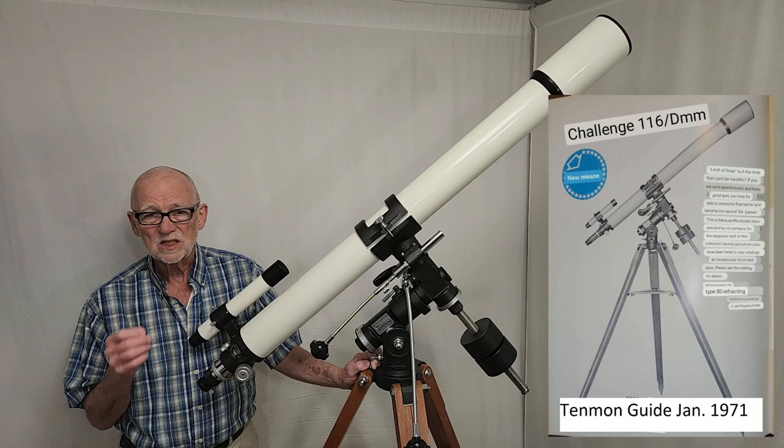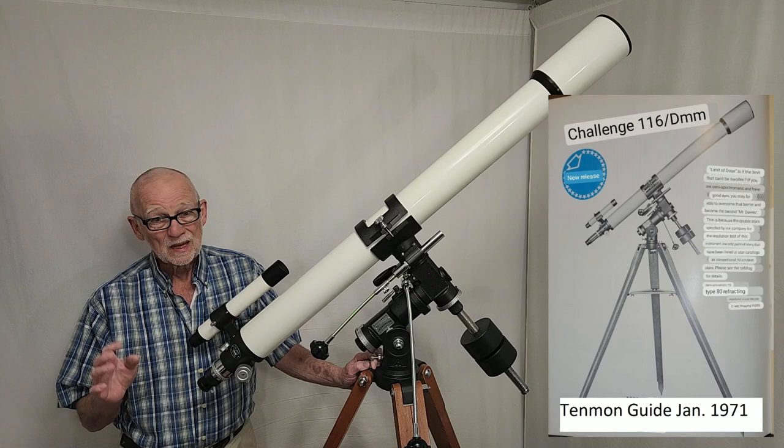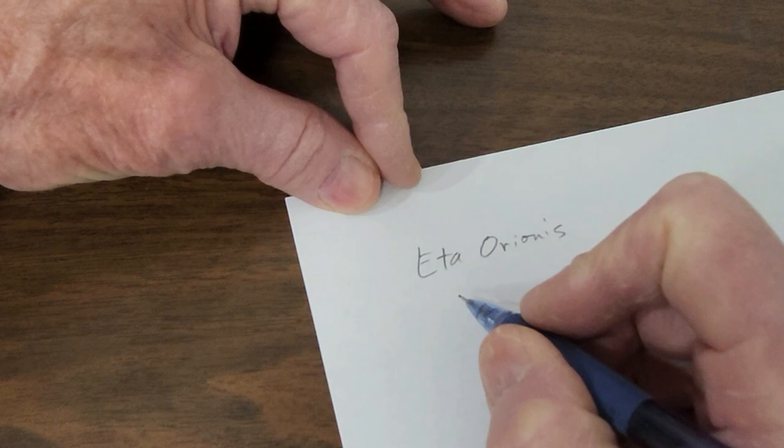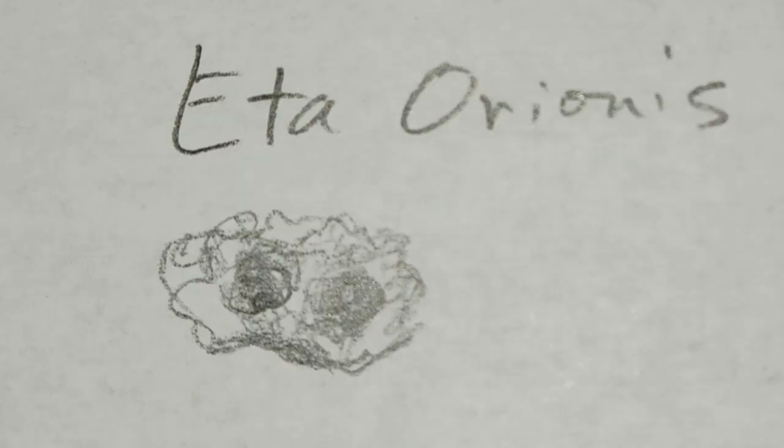One of the stars they claimed it could split was a star called Eta Orionis. So, I took this scope out last night and I tried to split Eta Orionis. Now, my seeing was not perfect, but here is my result. Here's what Eta Orionis looked like to me last night through the telescope. That's about what it looked like at the best.